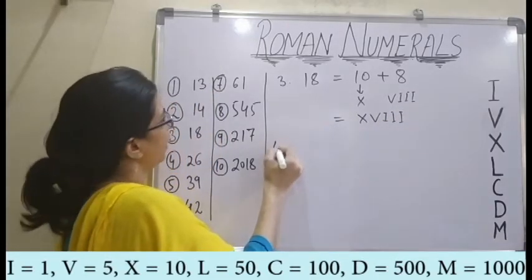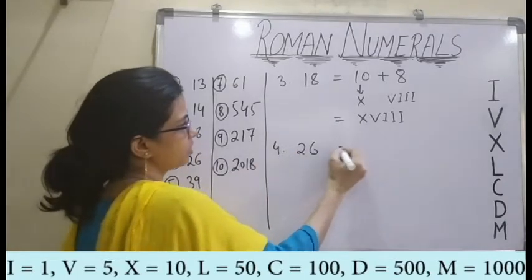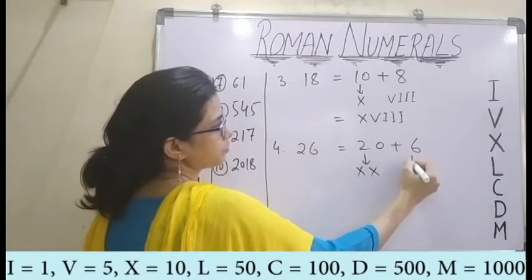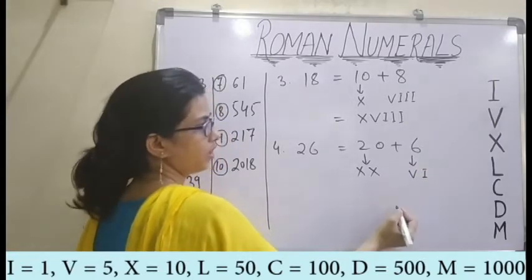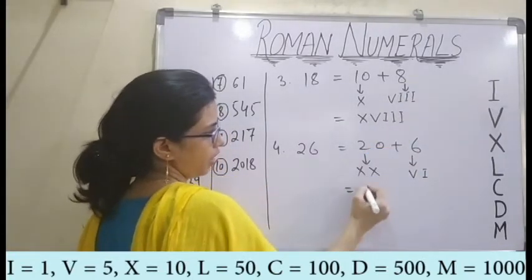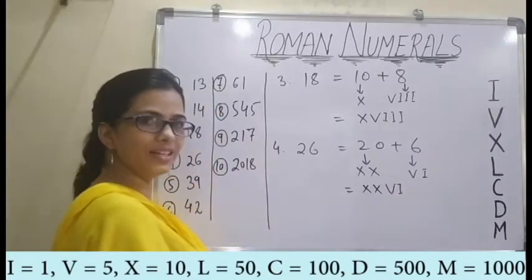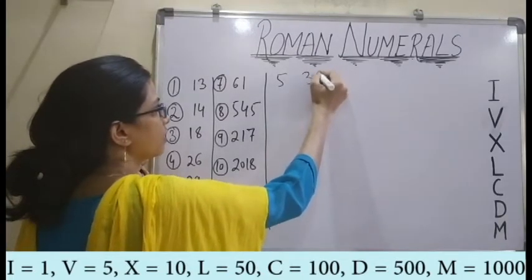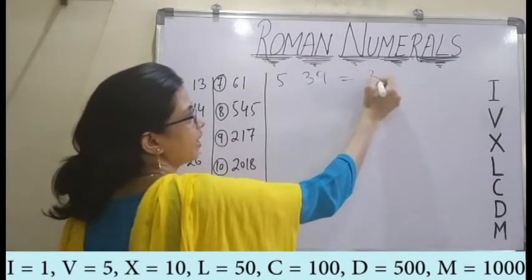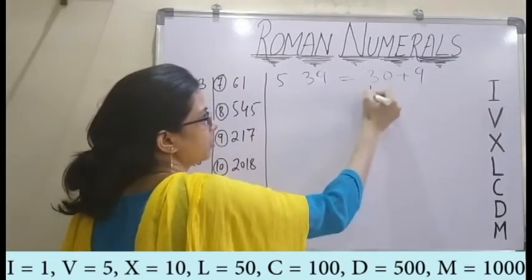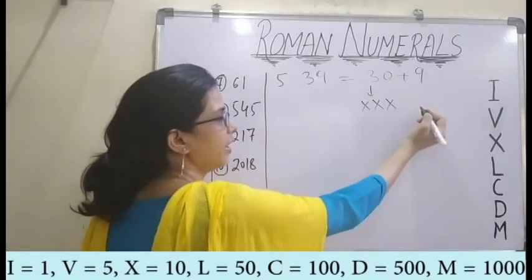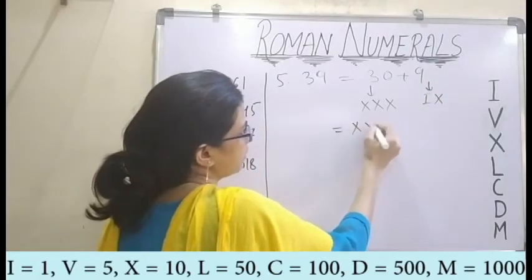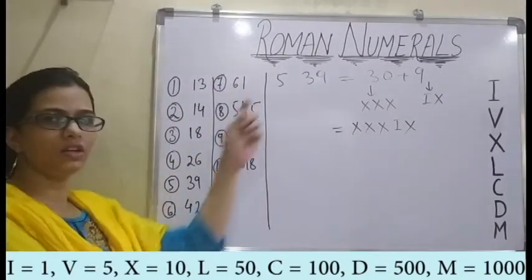Next I have 26, which is 20 plus 6. For 20 I have double X, and for 6 I have VI. So I have XXVI for 26. Fifth, which is 39: I have 30 plus 9. For 30 I have triple X, and for 9 I have IX. So my answer is XXXIX for 39.